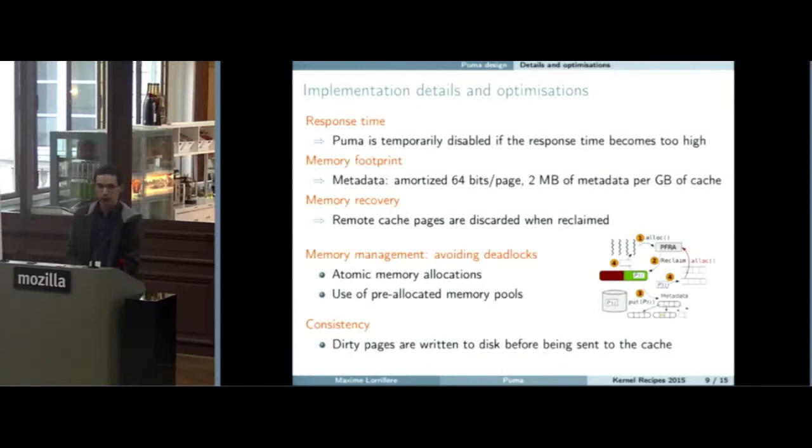There are a few implementation details that are important. First is the response time because we rely on a fast network and especially on low latency network. If the latency is very variable, we may actually decrease the performance of the application. For that we monitor the network latency and we disable our mechanism if the response time becomes too late. Second difficulty is the memory footprint because we have to keep some data locally. But if we keep a lot of data for each page sent to the network, we may use more memory than if we just don't use the mechanism. To do that, we have an amortized 64 bits per page cost, which means almost 2 megabytes of metadata for each gigabyte of cache used remotely.